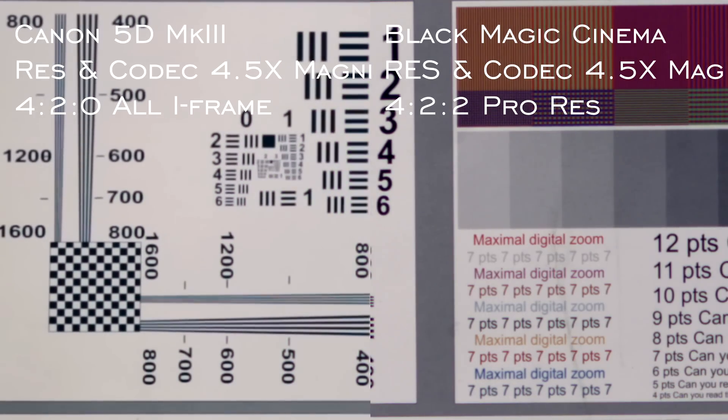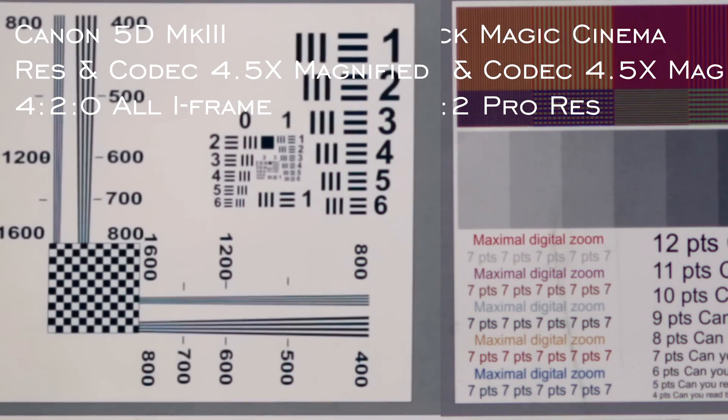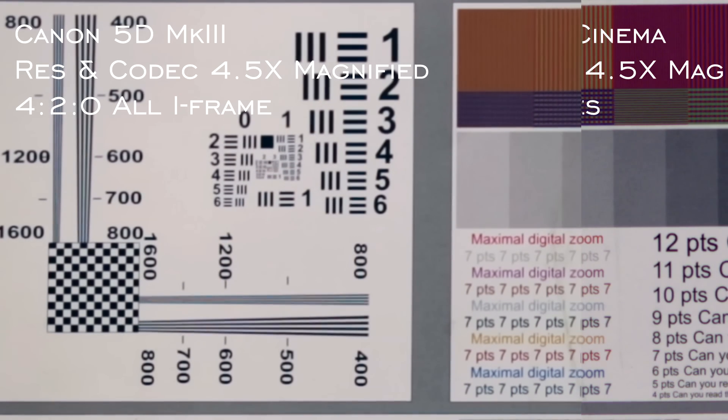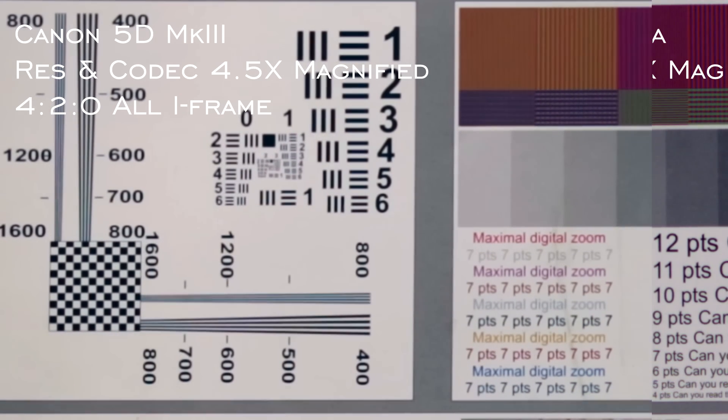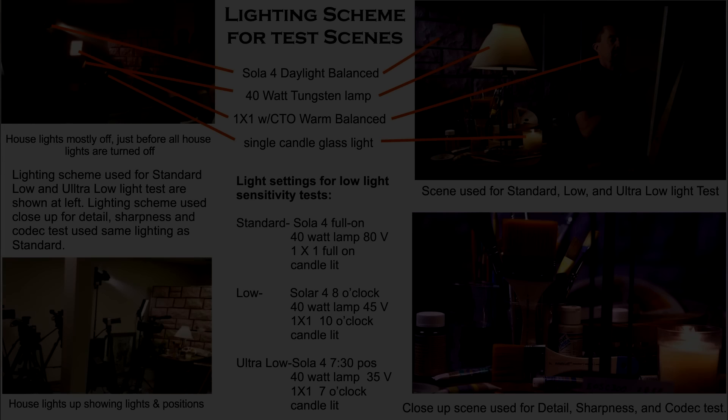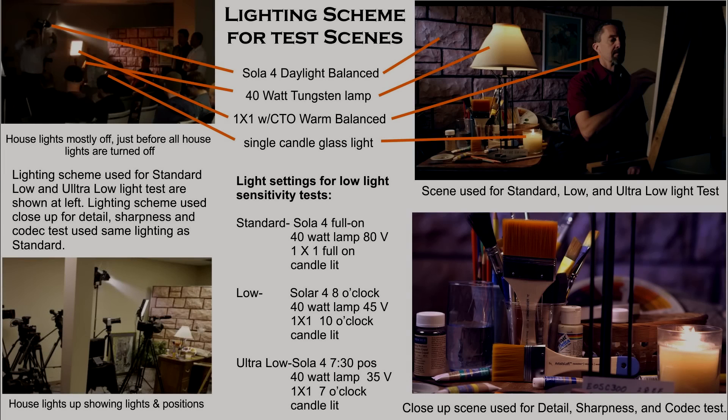Both had their flat, no-enhancement mode turned on, which is how we tested all of the cameras. They're both at f/2.8 in this case with the same Canon lens.